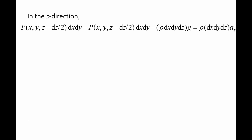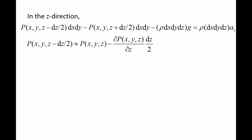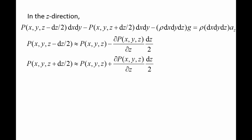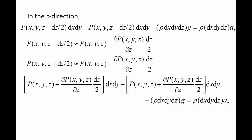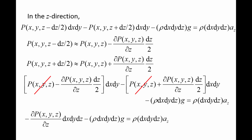For the equation of motion in the z-direction, the pressure at z minus half dz is approximately the pressure at x, y, z minus partial p partial z at x, y, z times dz divided by 2. The pressure at z plus half dz is approximately the pressure at x, y, z plus partial p partial z at point x, y, z times dz divided by 2. Plugging these expressions into the equation of motion, we see that the pressure at x, y, z drops out, and we can eliminate dx, dy, dz from both sides. We are left with negative partial p partial z evaluated at x, y, z minus rho times g equals rho times az.